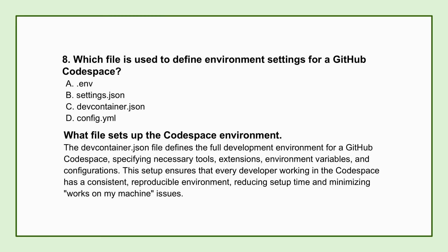Shifting gears slightly, let's talk development environments. A lot of teams now want everyone working in an identical, pre-configured setup to avoid those works-on-my-machine problems. Which specific file is used to define the settings for a GitHub Codespace? That would be the devcontainer.json file. This file specifies everything needed to create a reproducible development environment — it lists the tools, extensions, OS settings, whatever needs to be pre-installed. When you or anyone else on your team spins up a Codespace, it's ready to go consistently and immediately. Everyone's machine is configured identically by this file.